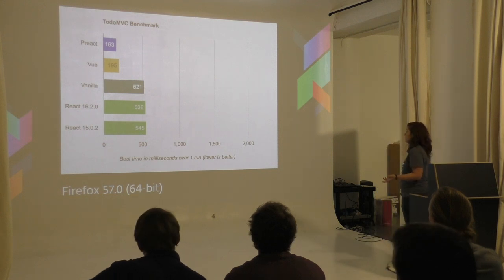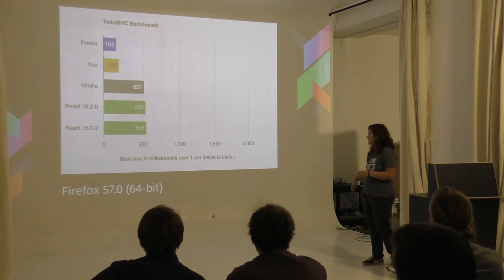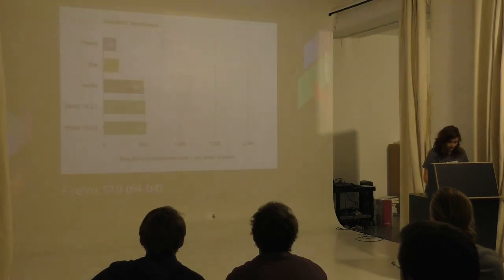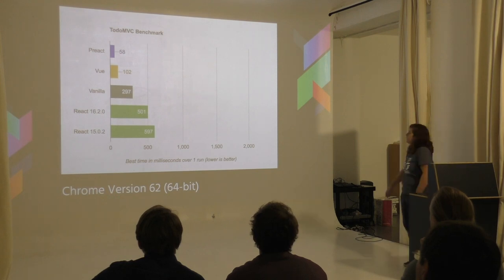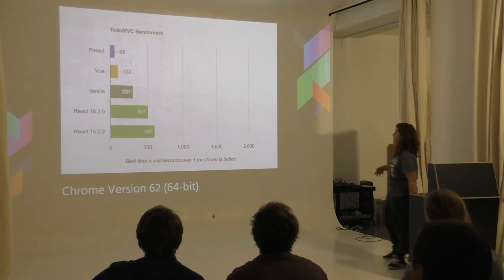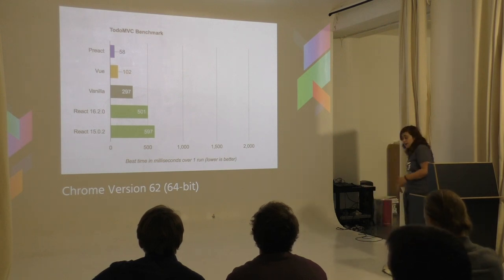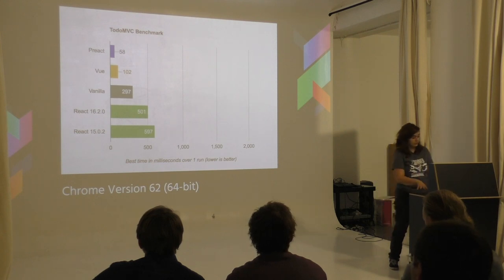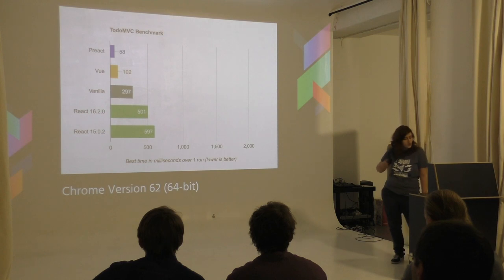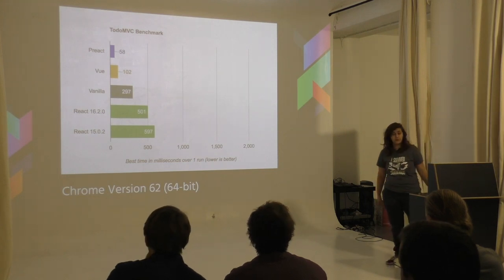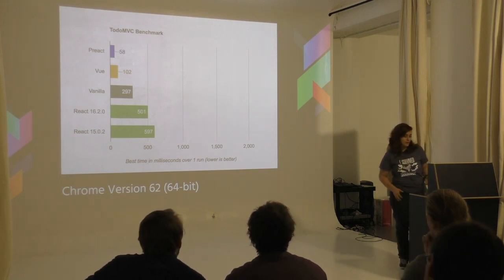In the benchmark, Preact takes about 163 milliseconds - the smallest is biggest in this case. Vue takes about 195, and React 16 takes about 535 milliseconds. On Chrome: about 58 milliseconds for Preact, then Vue, then Vanilla, then React. So Preact is - and somebody's going to crucify me for this - slightly faster than React, and you can clearly see a bigger difference on shittier devices.